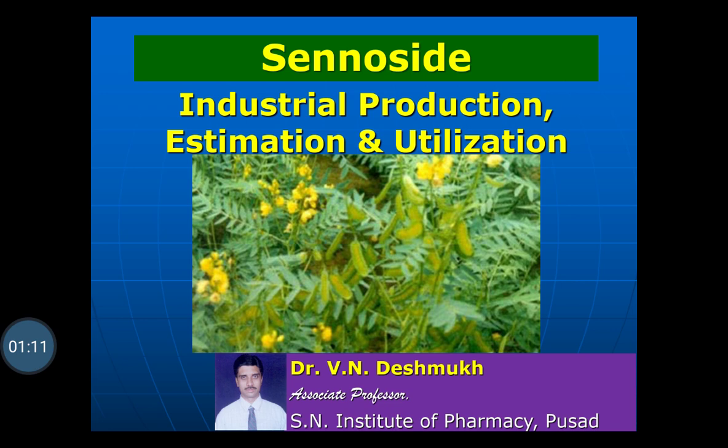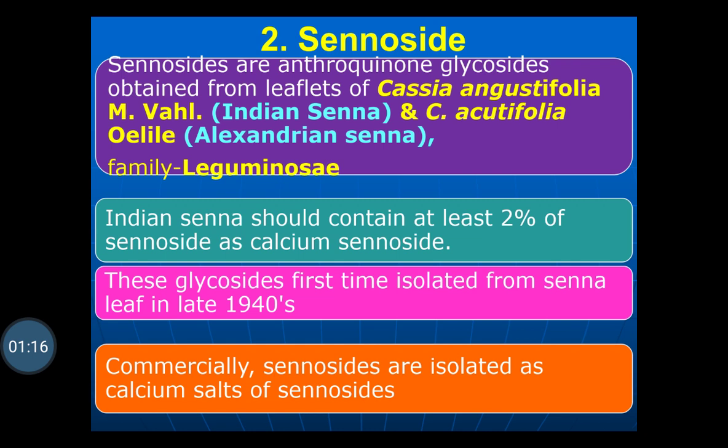Sennosides are the anthraquinone glycosides obtained from the leaflets of Cassia angustifolia and Cassia acutifolia. Cassia angustifolia is called Indian Senna and Cassia acutifolia is called Alexandrian Senna, both belonging to family Leguminosae.